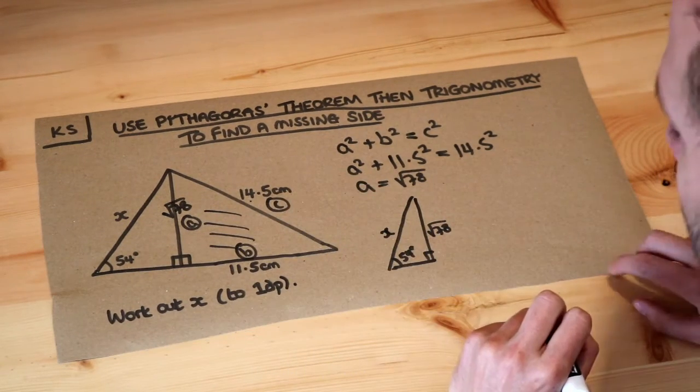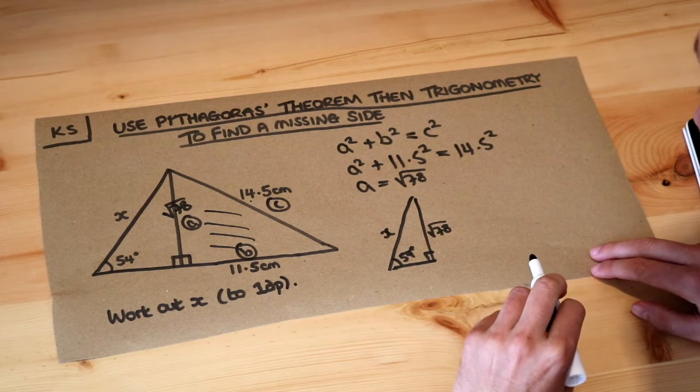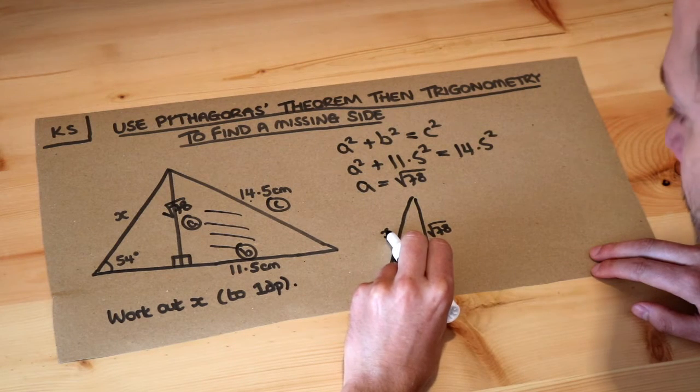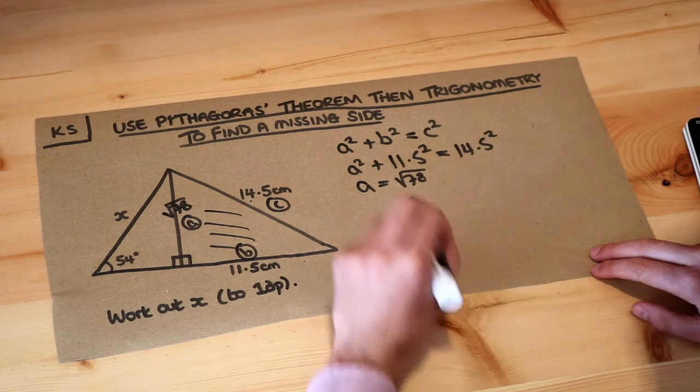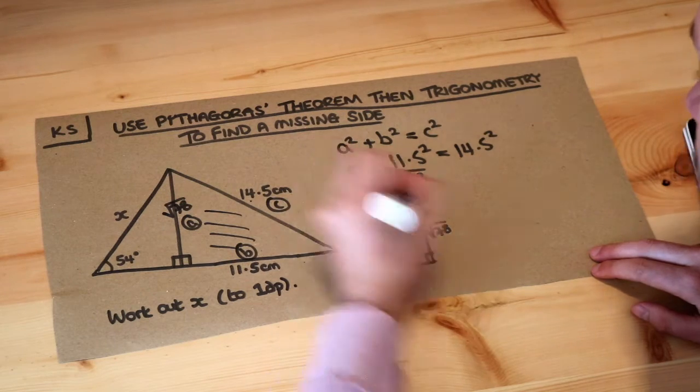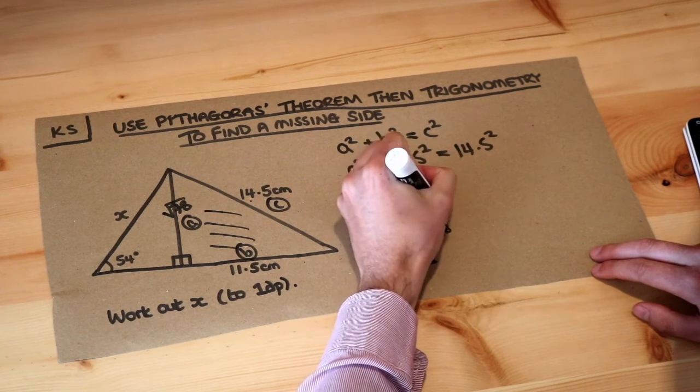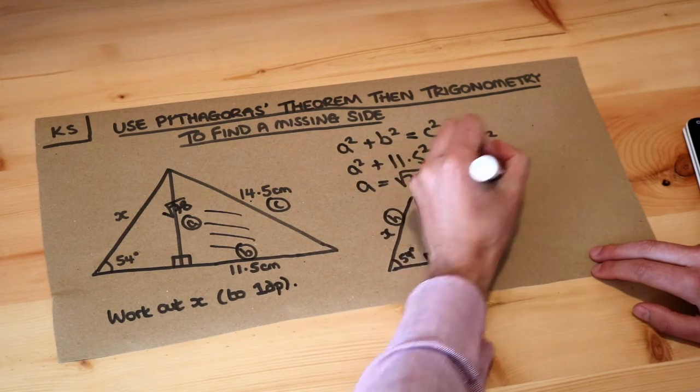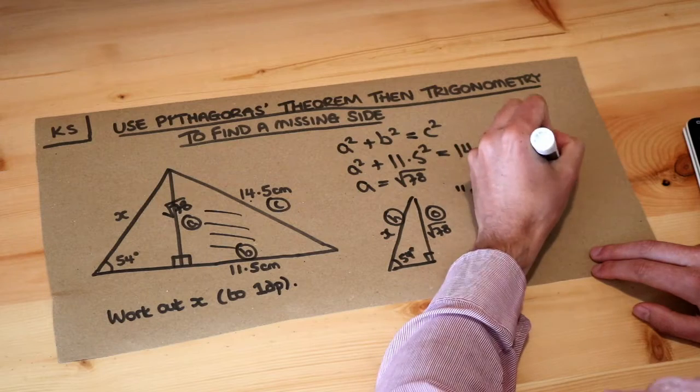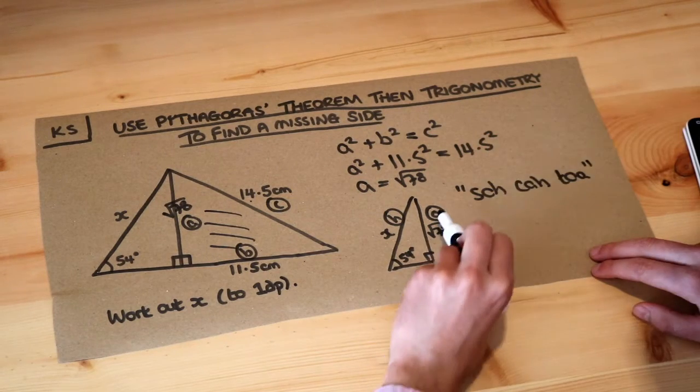Remember how SOHCAHTOA works - we label the sides we're interested in. We're interested in this side where we're trying to work out x. That is the hypotenuse so we put the H, and then this side is opposite that angle so we label it as O for opposite.